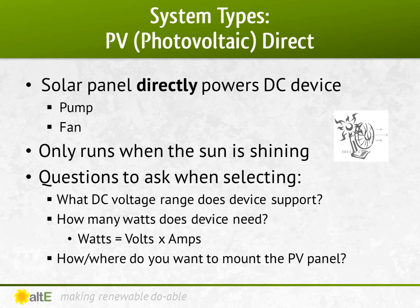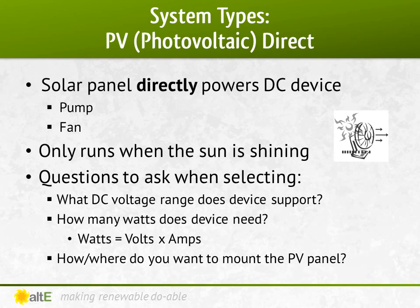The obvious advantage of a PV direct system is its simplicity. When the sun shines, the device runs. When it's not shining, the device doesn't run. It's generally fairly easy to install and you don't have the expense and hassles of batteries. When you are choosing a PV direct system, you need to determine what DC voltage the device runs on. It must be a DC device. You can't just plug an AC device into a solar panel instead of into the wall socket.